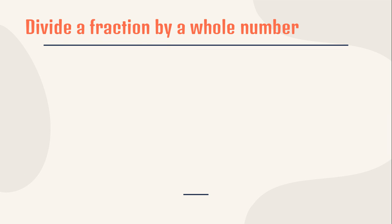So first we're going to learn about lesson 1: dividing a fraction by whole number. Before that we're going to recall. Look at here. So what is it? A per B, or A out of B — that's how we read this fraction.